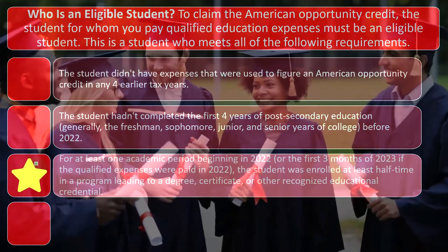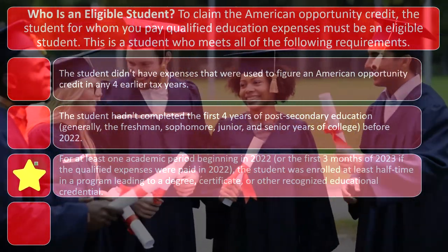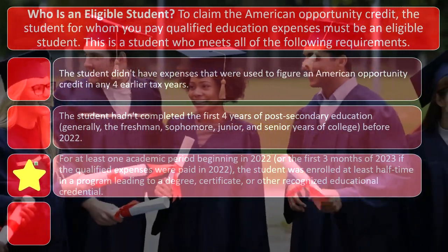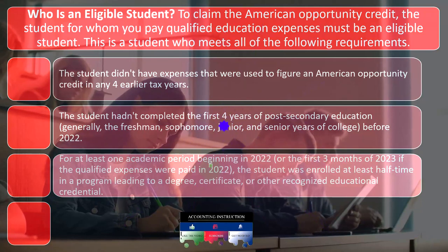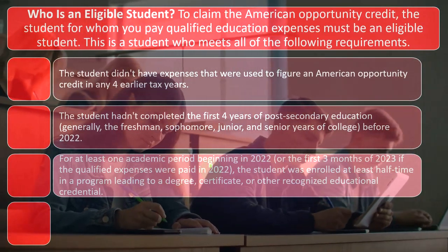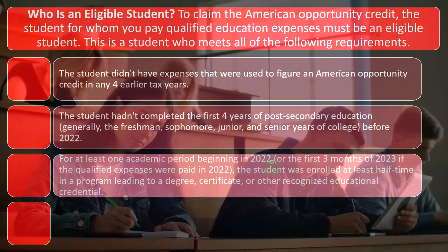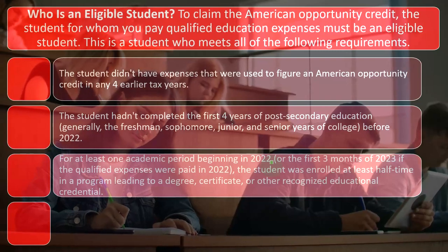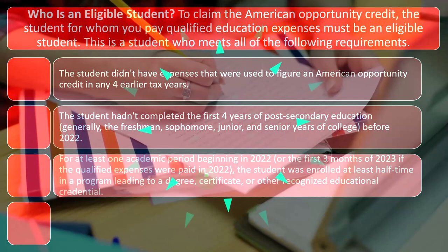Condition three: for at least one academic period beginning in 2022, or the first three months of 2023 if the qualified expenses were paid in 2022, the student was enrolled at least half-time in a program leading to a degree, certificate, or other recognized educational credential. Academic periods are generally trimesters or semesters — talk to the school to confirm. The three-month extension into 2023 exists because you might have paid for courses in 2022 that don't start until 2023.